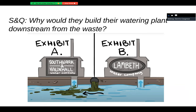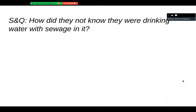Why would anyone build their water plant downstream from a waste plant? That's an excellent question — one I do not have an answer for. How did they not know they were drinking water with sewage in it? I think none of us really have a concept of what life was like before chlorinated water. Maybe the water just always had that kind of stench. But thank goodness for chlorinated water — it's outstanding.